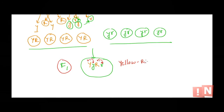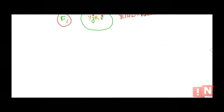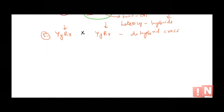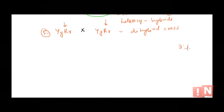So the F1 generation all plants are going to have yellow and round seeds. The magic happens in the F2 generation. When Mendel crossed two plants from the F1 generation, so far we were used to seeing a 3:1 ratio — three plants with yellow and round seeds and one with green and wrinkled should have appeared. But in this case what he observed was a 9:3:3:1 ratio.